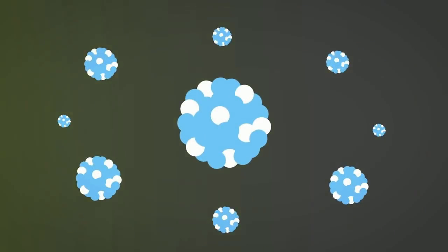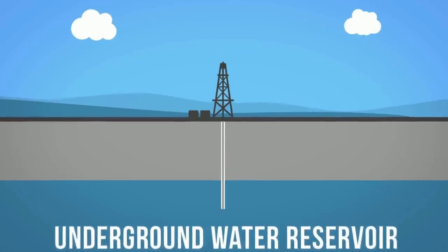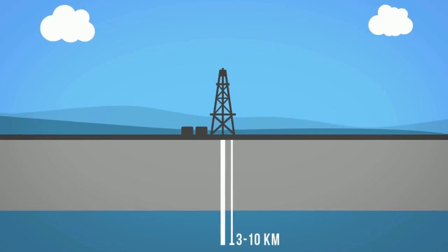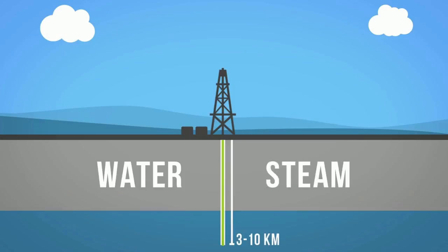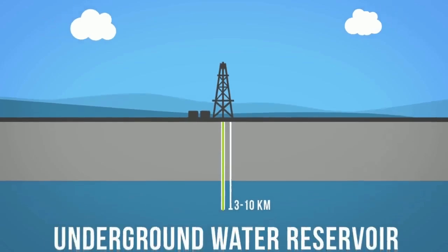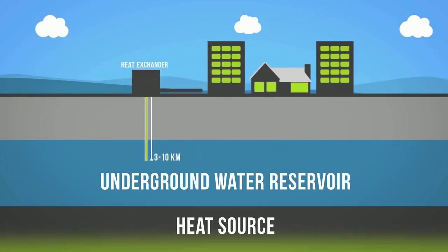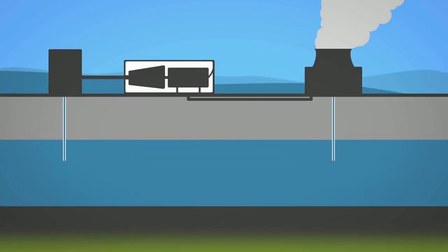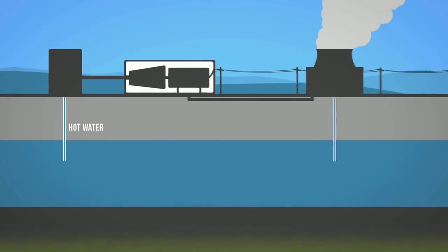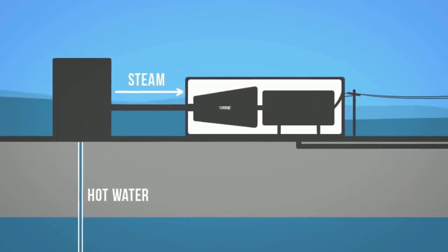Geothermal energy is produced from the internal heat of the Earth, generated from radioactive decay of minerals and continual heat loss from the Earth's original formation. Geothermal wells are drilled into the Earth's crust at approximately a depth of 3 to 10 kilometers. The heat is extracted using water and steam. Hot water from the Earth may be directly extracted to heat homes and buildings, either by directly circulating the hot water through buildings or by pumping it through a heat exchanger. Geothermal heat can also be used to produce electricity in a geothermal power plant, where steam turns turbines on a generator.